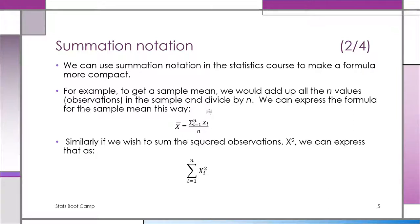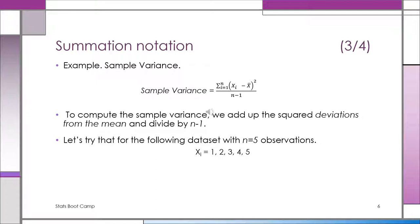Also, we're going to talk about summing squared observations in the course. We're going to learn about ways to measure variation. One of them is the sample variance, where we're basically getting the deviations around the mean, squaring them, adding them up, and dividing by n minus 1. We'll worry about why we're dividing by n minus 1, and not n, once we actually get to the course.